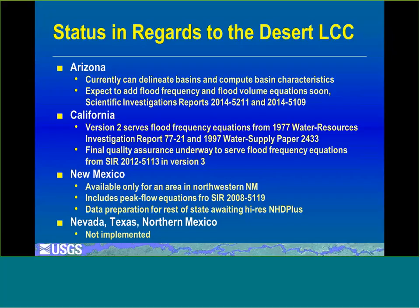Nevada and Texas are not participating at this point. There has been some interest in getting a StreamStats application in Nevada, but to date no state agency has come forward to cooperate with the local office. We don't have StreamStats in Mexico, but if there were regression equations available there, it would probably be possible to set up an application — we're now working on an application for an area within Canada, so there is some precedent for that.